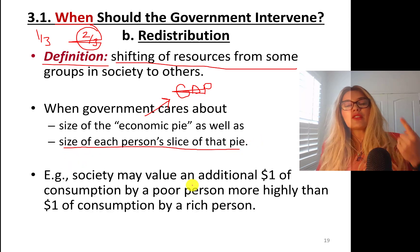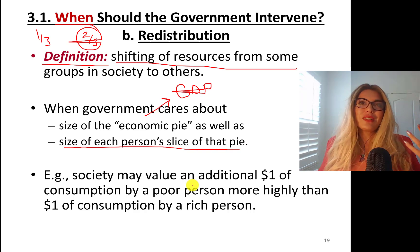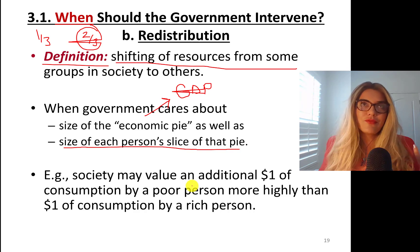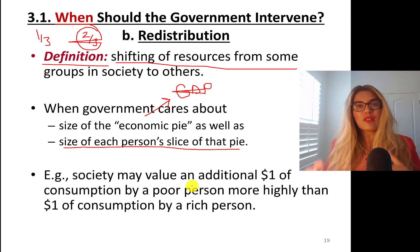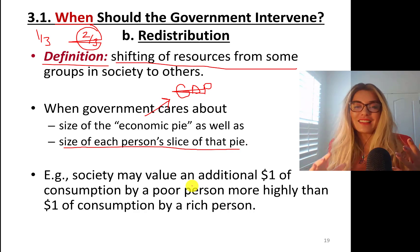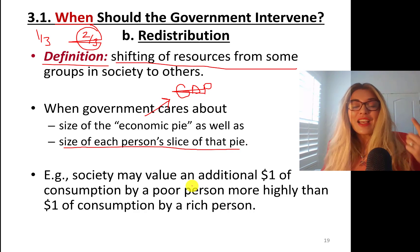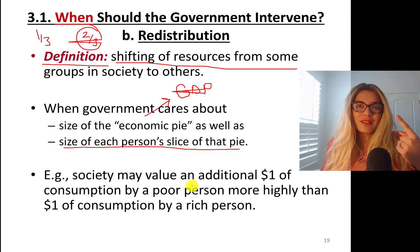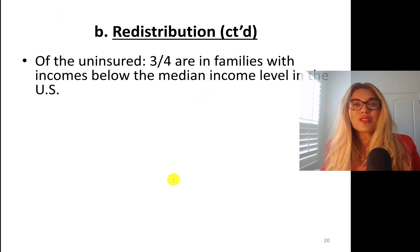Society may value an additional $1 of consumption by a poor person more highly than $1 of consumption by a rich person. I make more money than an average college student, so the government feels it should tax Dr. G — and I do pay a lot of taxes, which I'm proud of as my duty as a citizen. The government might think that $1 put towards education to support students is more valuable. That's an example of redistribution.